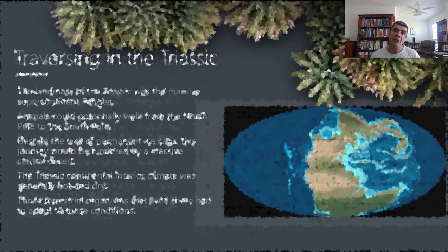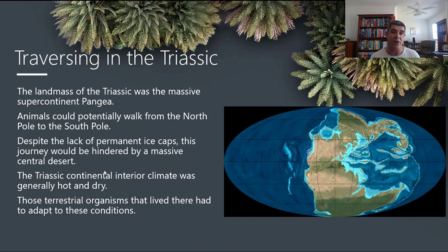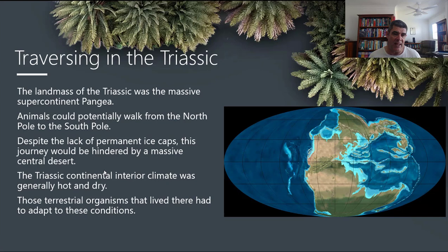Moving forward into the Triassic, we are looking at Pangaea — this big supercontinent made of Laurasia in the north and Gondwana in the south, predating most of the continental movements that led to the current distribution of continents. Back in this time, you could potentially have walked from the North Pole to the South Pole. The problem is that there was a very large central desert in the middle — very hot, very dry.